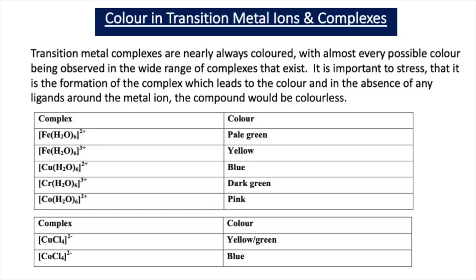Now in our previous video lessons, we've looked at the colour in transition metal ions and complexes and we've learnt that transition metal complexes are nearly always coloured, with almost every possible colour being observed in the wide range of complexes that exist. We've also stressed that it's the formation of the complex which leads to the colour, and in the absence of any ligands around the metal ion, the compound would be colourless.